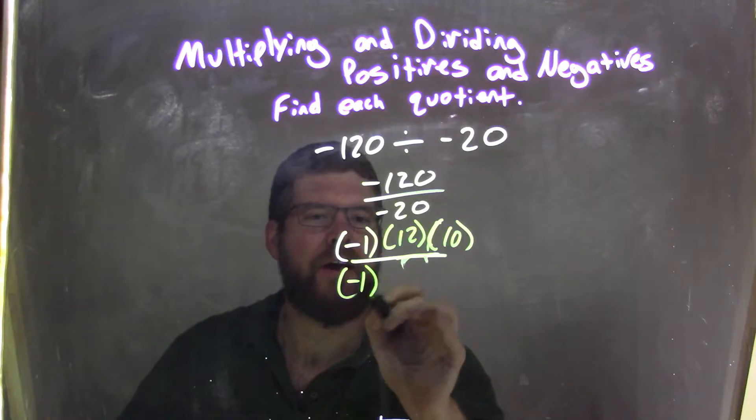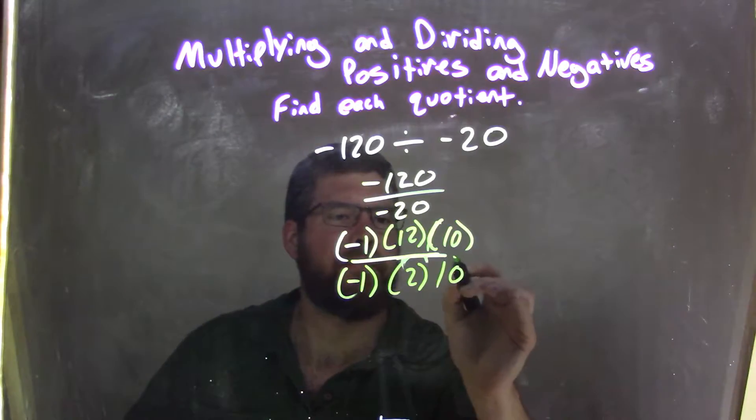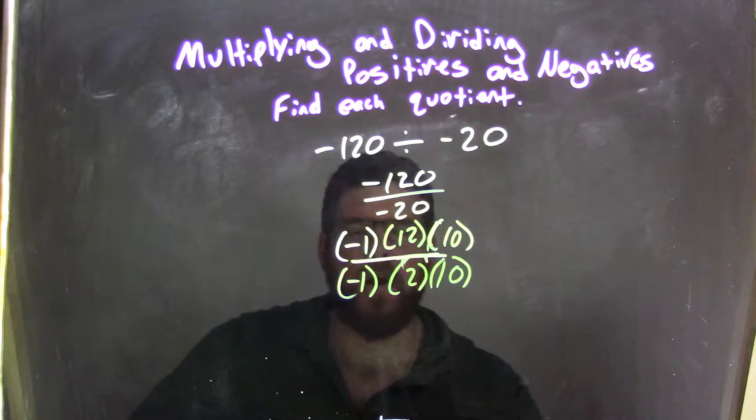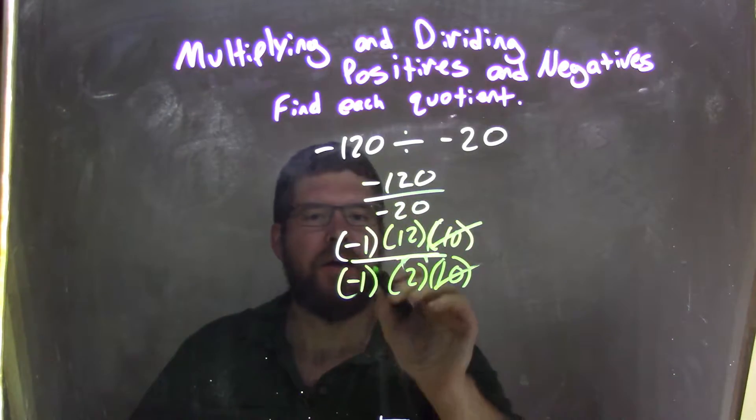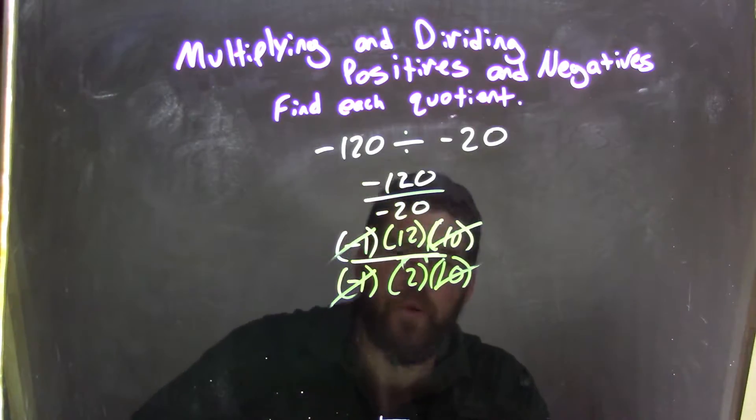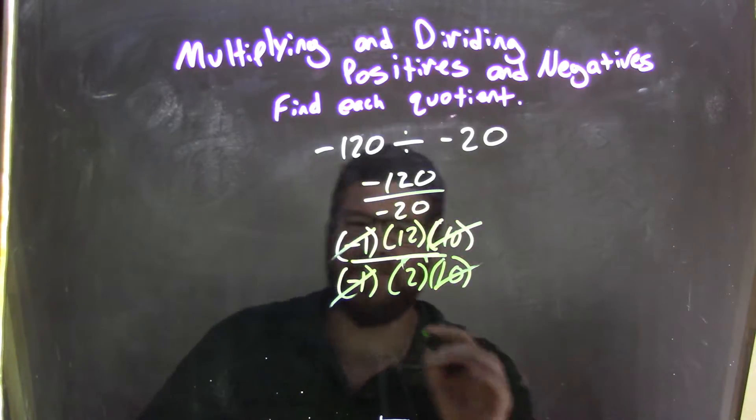The denominator, negative 1 on the outside, and 2 times 10. Alright, 2 times 10 is 20. Well, the 10s cancel fairly quick, negative 1s cancel, and now we're left with 12 divided by 2. Well, 12 divided by 2, that's just 6.